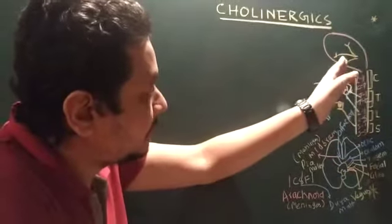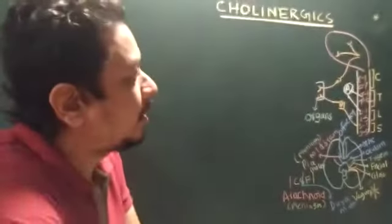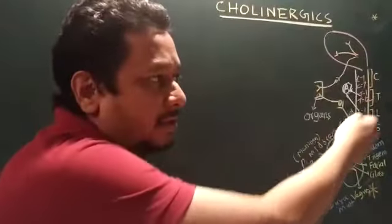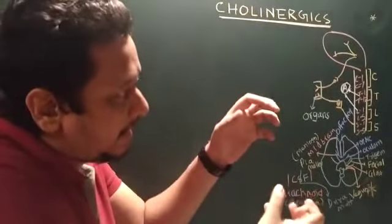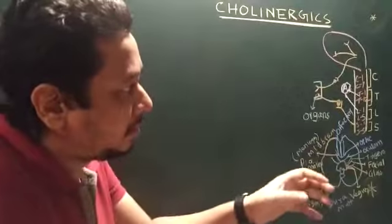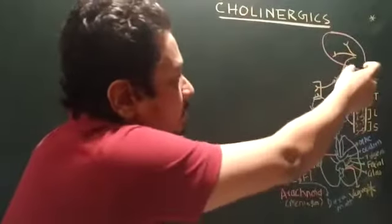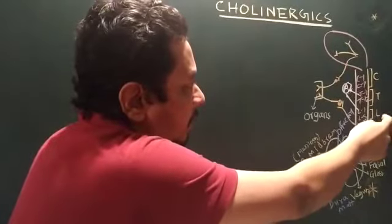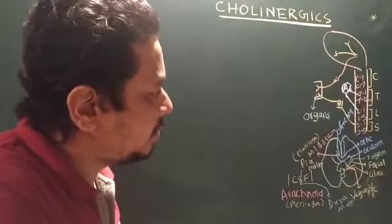I have described the CNS in my earlier video. Where the brain stem ends — medulla oblongata, the brain stem ends — from there the spinal cord starts. These are the regions of the spinal cord: cervical, thoracic, lumbar, and sacral.